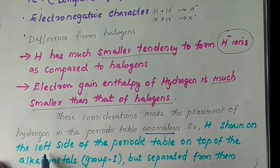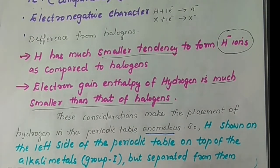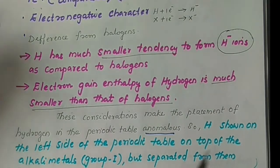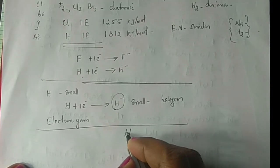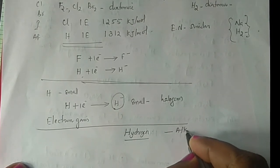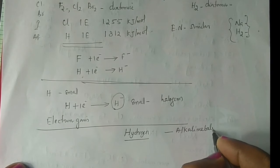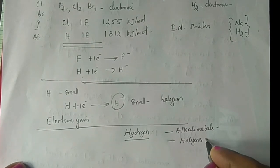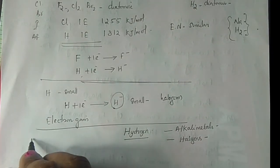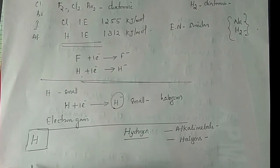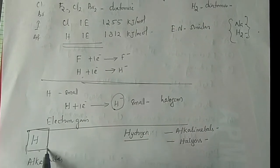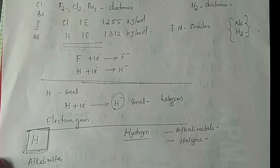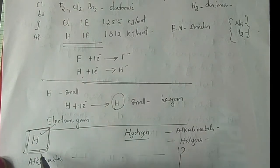Hydrogen is shown on the left side of the periodic table, on the top of the alkali metals group 1, but separated from them. Because hydrogen has similarities with alkali metals and similarities with halogens but belongs fully to neither group, it is given a separate place. The first group contains alkali metals and the 17th group contains halogens, and hydrogen is placed independently.